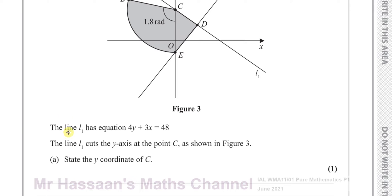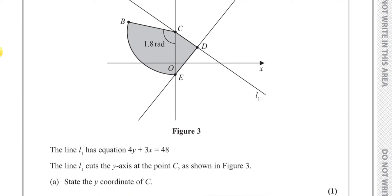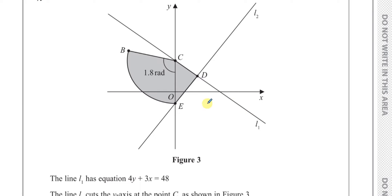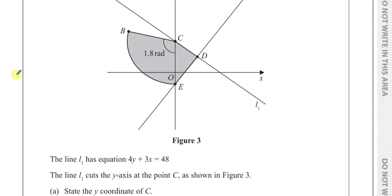Question number seven, part A says that the line L1, which is this line over here, has the equation 4y plus 3x equals 48. The line L1 crosses the y-axis at the point C, as shown in figure three. State the y-coordinate of C.